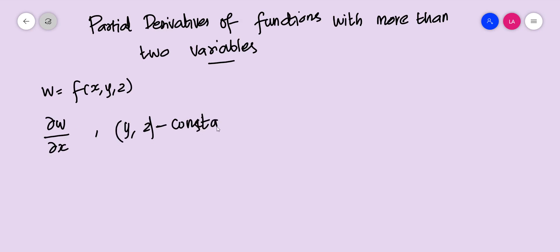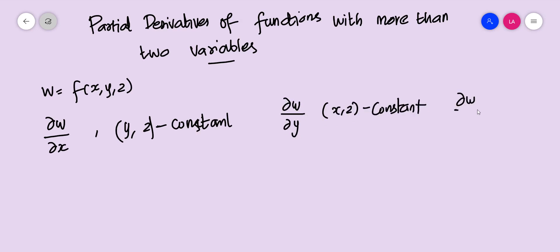Similarly, ∂w/∂y is computed with X and Z held constant. And ∂w/∂z is computed with X and Y constant. We can also define higher-order derivatives: ∂w/∂x, ∂²w/∂x∂y, and ∂³w/∂x∂y∂z.